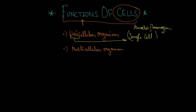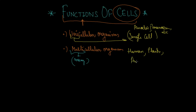The other type is multicellular organisms. Multicellular means many cells. Examples of multicellular organisms include humans, almost all plants, and animals.